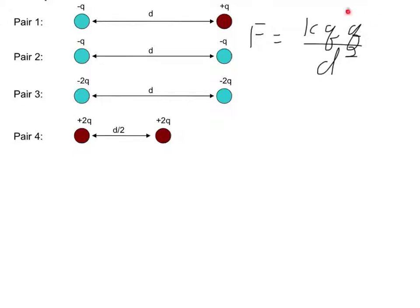In order to answer this question, we're going to utilize Coulomb's law, which is written here on the right. So we can go through each pair and see how qualitatively it would affect the equation.